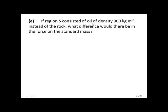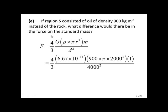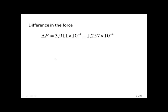If the region is oil of density 900 kilograms per meter cubed instead of the rock, what difference would there be in the force on the standard mass? Using the same equation and substituting the density of oil, we have F equal to 1.257 times 10 to the power of minus 4 newtons. So the difference in the force is given by 2.654 times 10 to the power of minus 4 newtons.